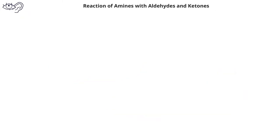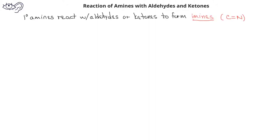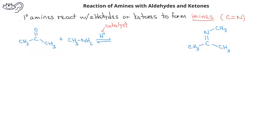Aldehydes and ketones can react with amines to form new kinds of compounds. If a primary amine reacts with an aldehyde or ketone, it would form a compound known as an imine. An imine is a compound that has a carbon double bonded to a nitrogen. For example, if we had acetone and reacted it with methylamine in the presence of an acid catalyst, we would get an imine formed where instead of a carbon-oxygen double bond, we have a carbon-nitrogen double bond.